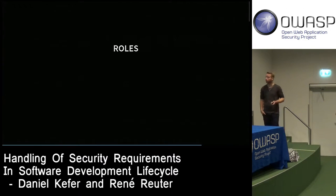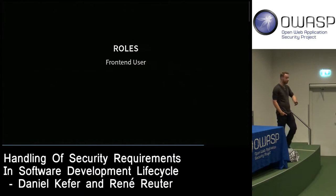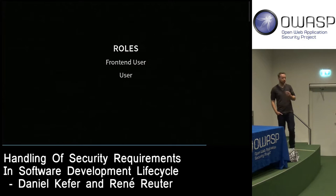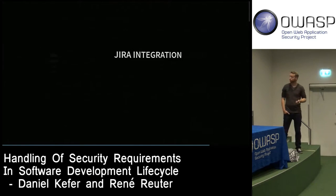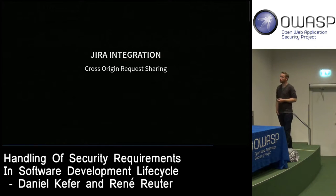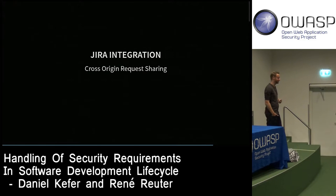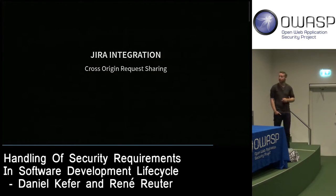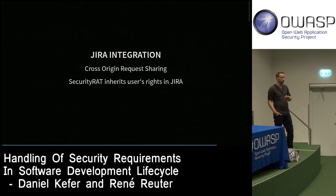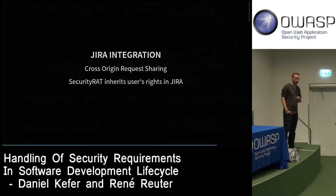For authorization, we have three roles: front-end user (can view and change requirements, and save); normal user (can also modify requirements in the backend database); and admin (can do everything, including delete and create users). The Jira integration requires the CORS header to be set on the Jira server, because Security Red inherits the user's rights to post to the Jira URL — if you don't have Jira access rights, Security Red can't create tickets either.